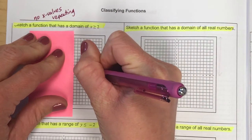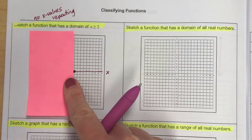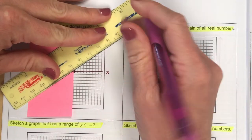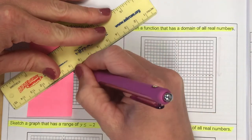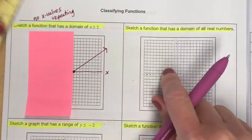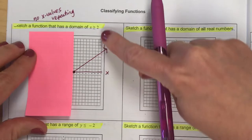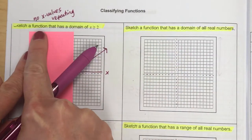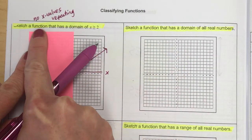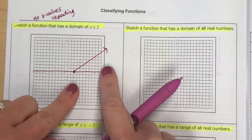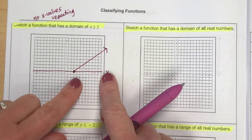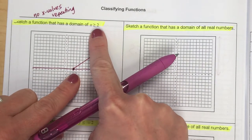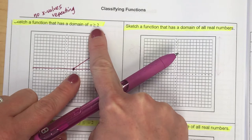I'm going to draw a dot on 2 and then draw a straight line off to the right side. That would pass the vertical line test — a vertical line would cross through only one time — so we have a function, and all of my x values, my domain, are greater than or equal to 2.